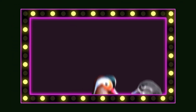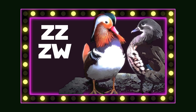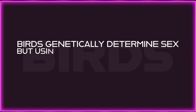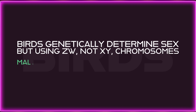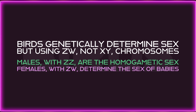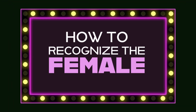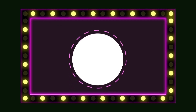Next, birds like ducks and peacocks operate with a ZZ/ZW chromosomal system. Birds genetically determine sex, writes Dr. Hilton, but using ZW, not XY chromosomes. Males with ZZ are the homogametic sex, and females with ZW determine the sex of babies. So how do we recognize the female? She makes large gametes.